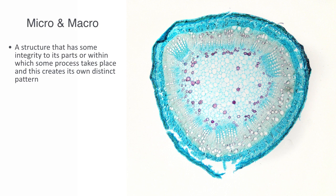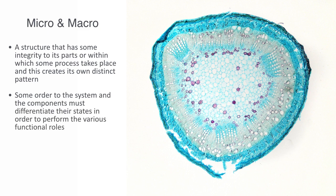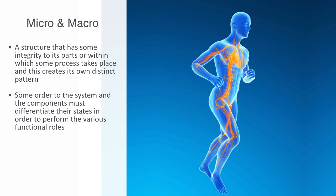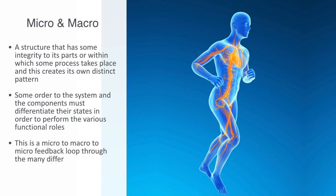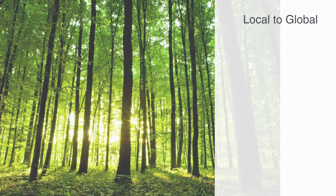A structure with integrity to its parts creates its own distinct pattern, which then feeds back to shape and constrain the components at the local level. For a process to take place there needs to be an enabling structure; that structure then defines order to the system, and local components must differentiate their states to perform the various structural and functional roles required. This is most evident in the way the human body as a whole regulates every local component of itself in order to enable global processes such as respiration and digestion — a micro-to-macro-to-micro feedback loop through the many different emergent levels from cell to tissues to organs and the entire organism.